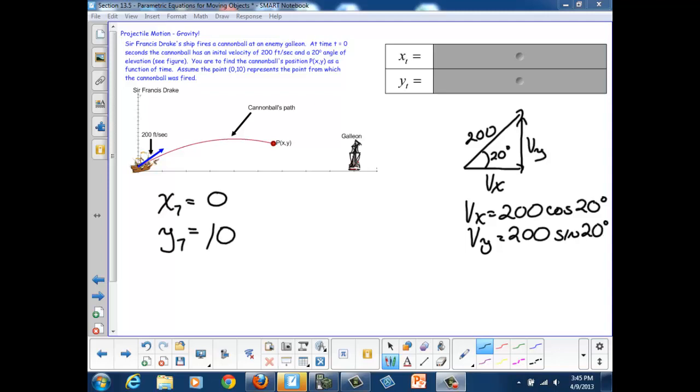Now we can use those velocities and work them into our parametric equations. So x is going to be 0 plus my velocity times time, so 200 cosine 20 degrees times t. And we'll use the same approach for y, so 10 plus 200 sine 20 degrees times t.